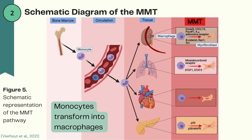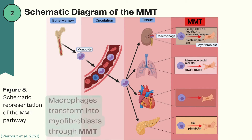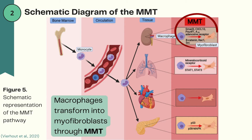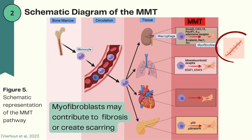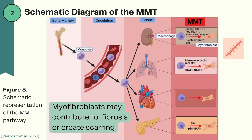At this point, the monocytes can now be considered macrophages, and it is these macrophages that can undergo the macrophage myofibroblast transition to become myofibroblasts. Once these macrophages have differentiated into myofibroblasts, they may contribute to tissue scarring and fibrosis.